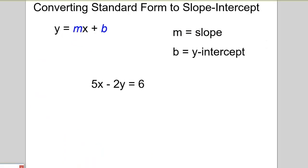For this equation, most people are already familiar with slope-intercept form. It's y equals mx plus b, where m is the slope and b is the y-intercept.